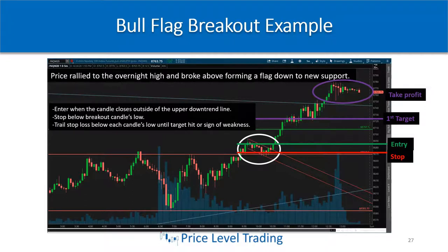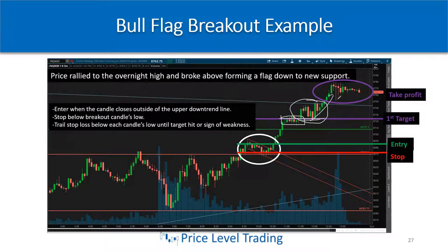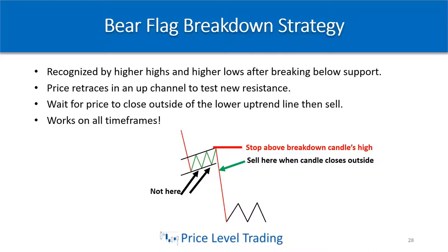Price came up and tested a major downtrend line — another area to take profit. We came back and tested the previous structure, held for continuation higher. Since this is near the market close, definitely be taking profit. It kept making higher highs and higher lows into the close — very strong momentum. Now let's take the opposite of a bull flag and talk about a bear flag breakdown.